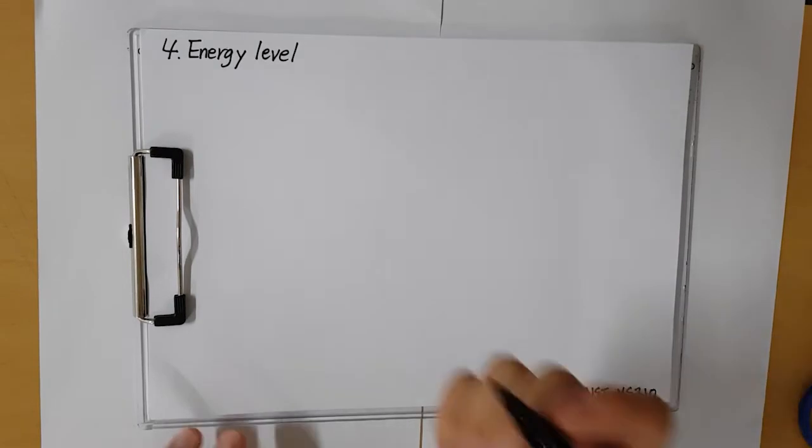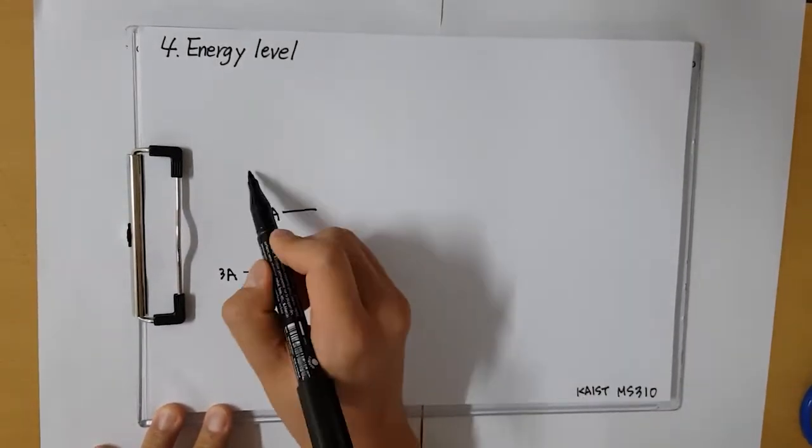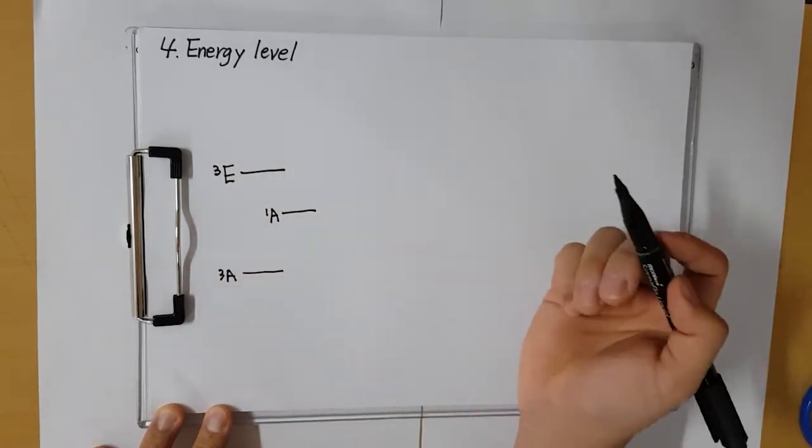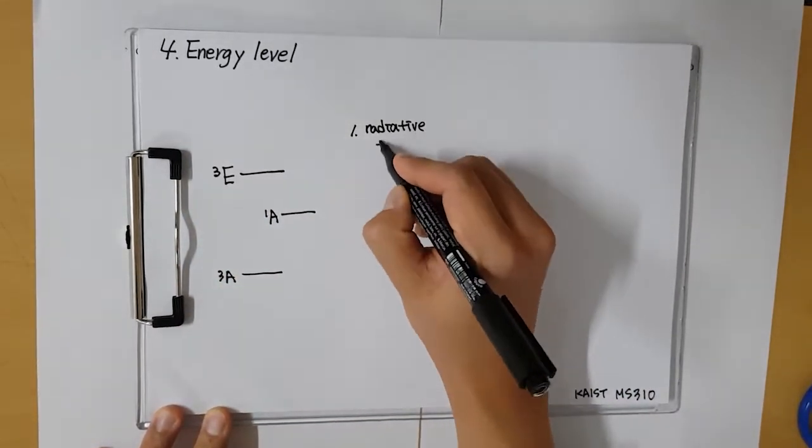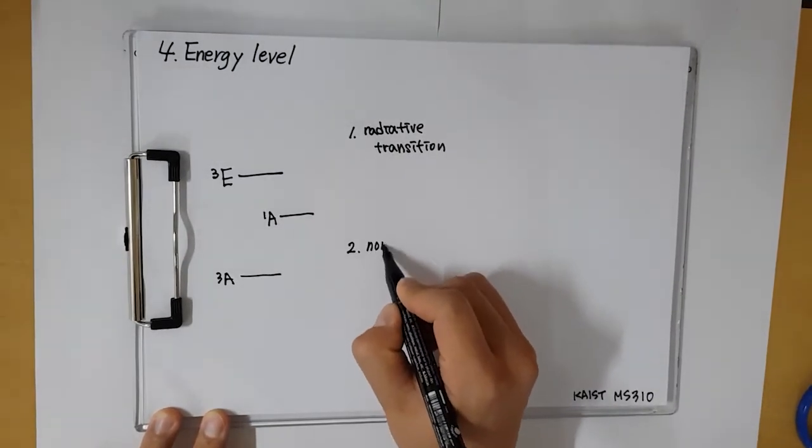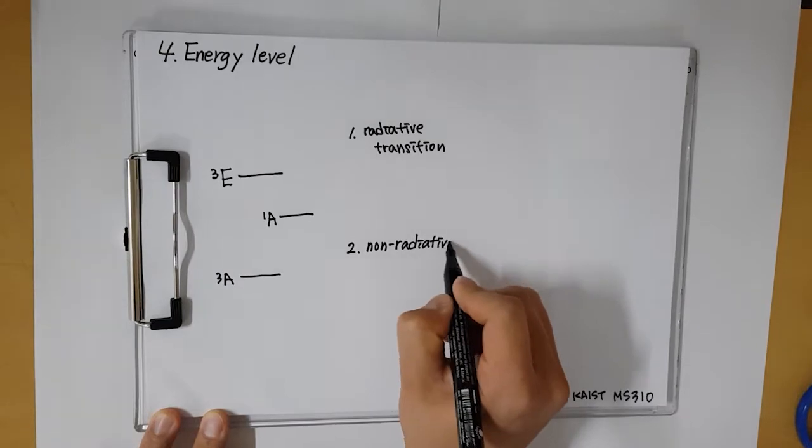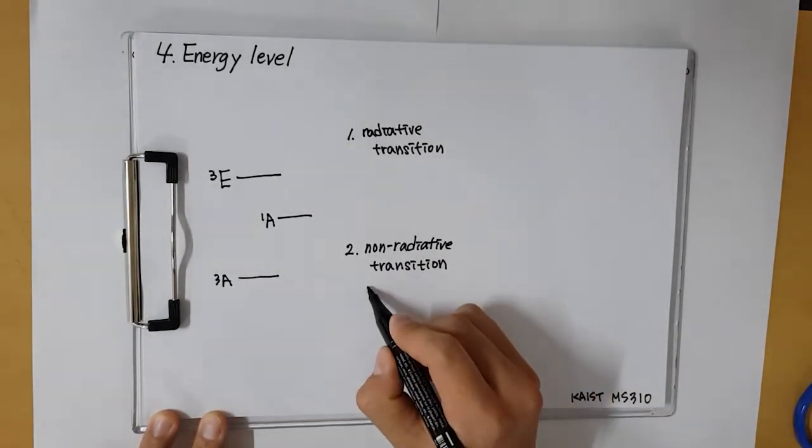There are two different transitions, non-radiative and radiative transition. At NV Center, the example of non-radiative transition is transition between triplet E state to singlet A state and singlet A state to triplet A state. These transitions are also called the inter-system crossing.